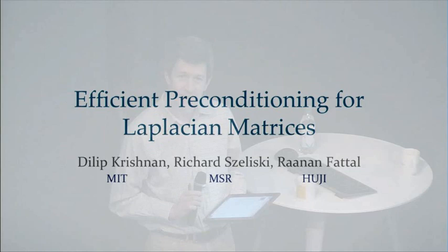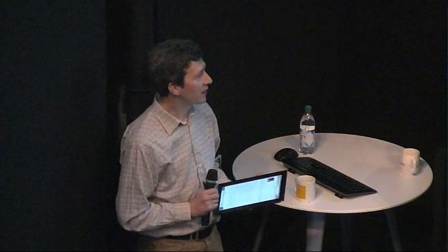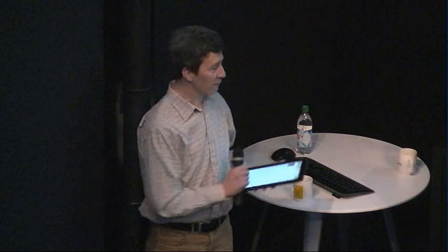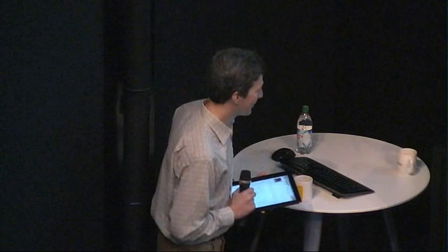I'm delighted to welcome Dilip Krishnan, who completed his PhD under Rob Fergus last year and has done a bunch of work that I found interesting over the last several years. You may be aware of the dark flash photography work from a few years ago, but I'm really interested in this work they did on preconditioning for problems that occur frequently in graphics and computer vision. Preconditioning has always been some black art that I've never properly understood, so I'm hoping Dilip will help us. He's currently a postdoc at MIT with Bill Freeman. Welcome, Dilip — looking forward to the talk.